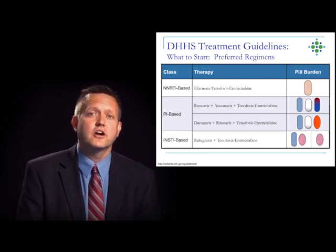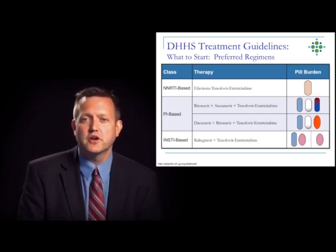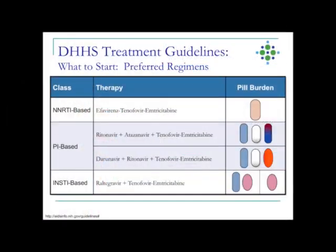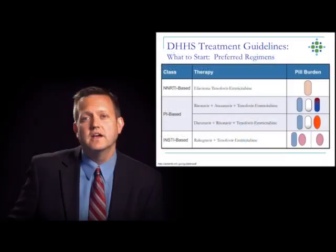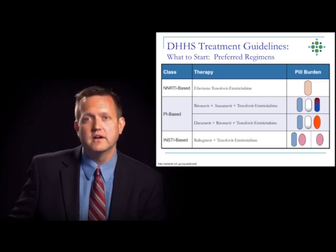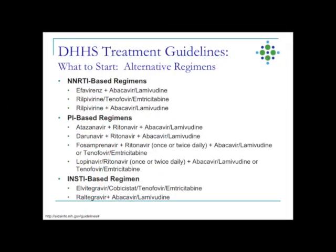The question of what to start when initiating ART in the US is nuanced. In general, the guidelines recommend four different regimen options as preferred: NNRTI-based, protease inhibitor-based, and integrase inhibitor-based regimens. Individualization of those regimens depends on the patient profile, comorbidities, and other factors. It's also important to recognize there is a long list of alternative regimens available, so for people better suited to one of those options, the guidelines do provide alternatives for ART initiation.